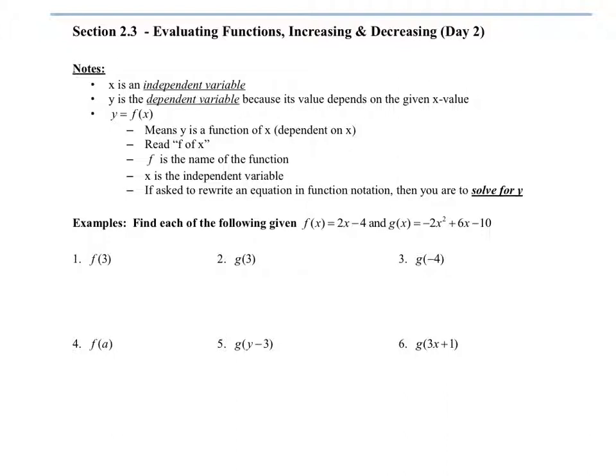Whatever X is changes your Y value, and the Y we're writing as F of X. F is the name of the function. In this case it's the G function because it's G of X — there could be different letters too. X is the independent variable. If you're asked to rewrite an equation in function notation, that means get Y by itself.